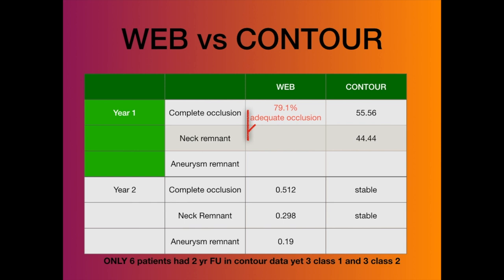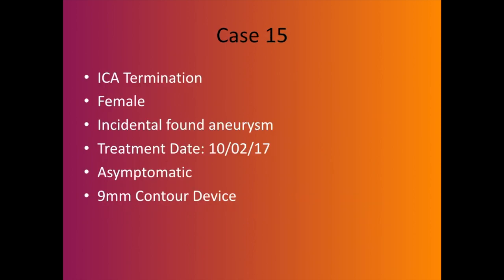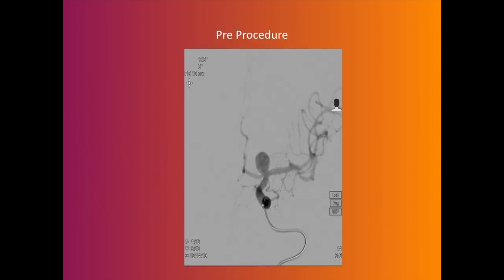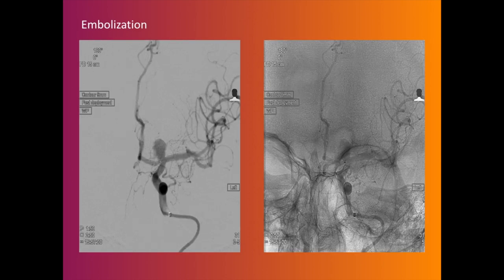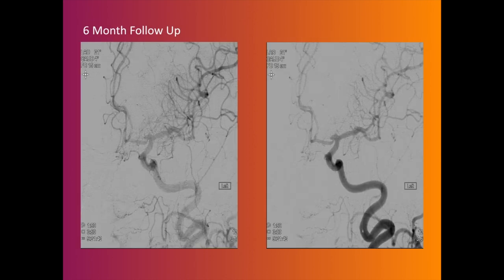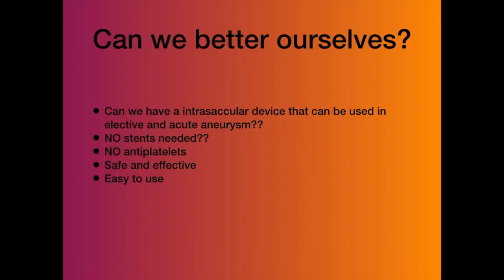For me, Contour and WEB are both safe. Contour shows a progressive occlusion of the aneurysm similar to what we would see with flow diversion. It's easy to size, easy to deploy, takes away all the pain you had with WEB, and gives much better occlusion rates. Here is another ICA termination aneurysm — device placed across the neck, immediate stasis, six-month follow-up showing occlusion, the device is stable, and there is complete occlusion.